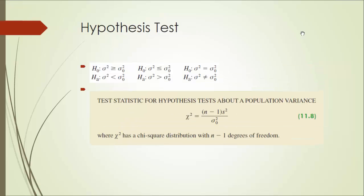As far as the hypothesis test is concerned, there are three different forms. No matter which form it is, we are going to calculate the test statistic the same way. The chi-square test statistic is given by n minus 1 times s squared divided by sigma zero squared, where sigma zero squared is the hypothesized variance of the population. The chi-square statistic has a chi-square distribution with n minus 1 degrees of freedom.